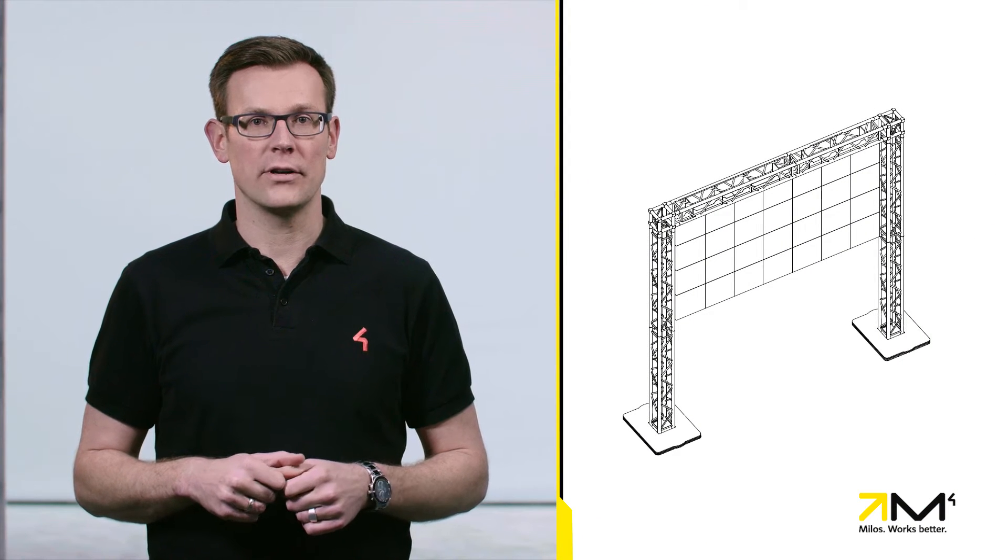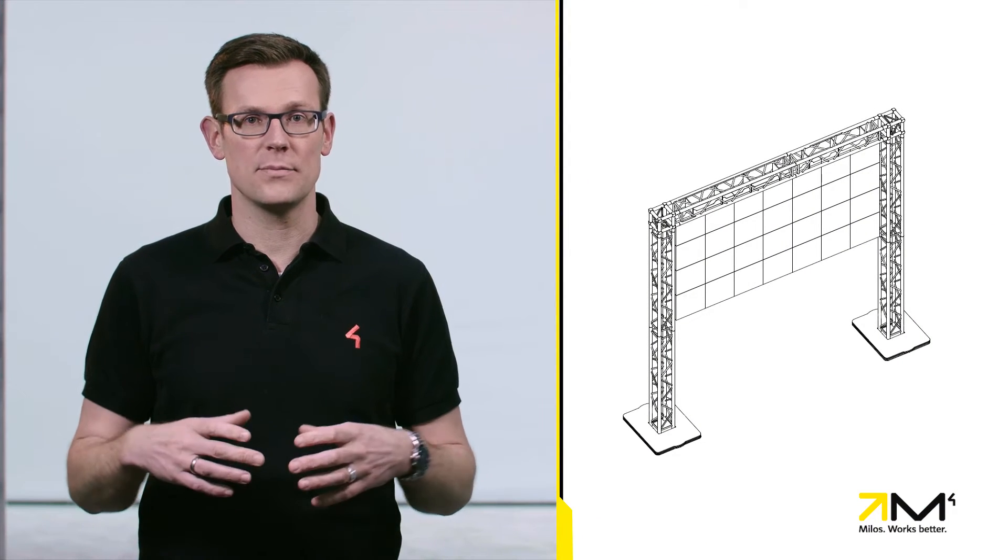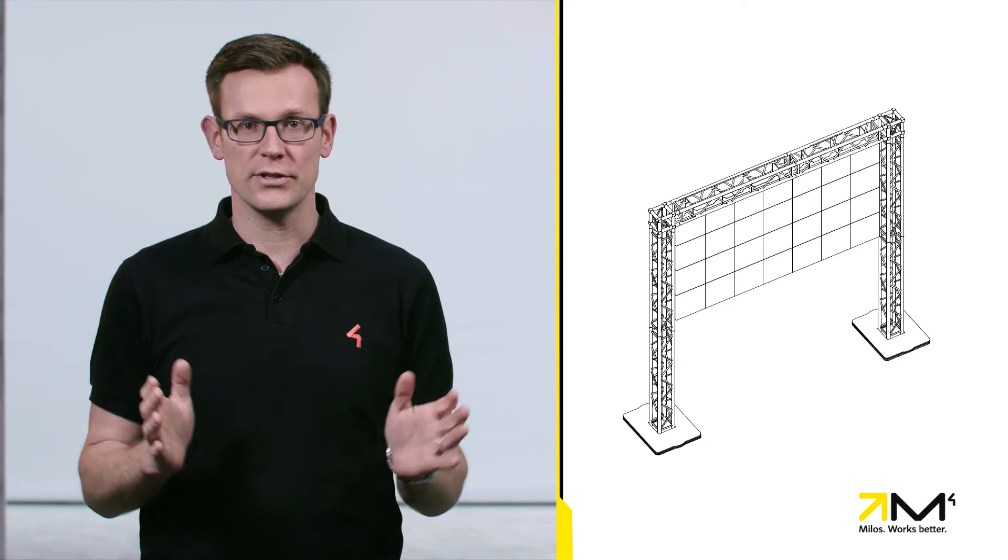The next proof refers to overturning. A structure is protected against overturning as soon as the standing moment is larger than the overturning moment. This principle is demonstrated on a truss frame that is stabilized by a base plate with a certain size and weight.